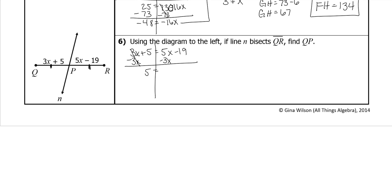Bring my 5 down. 5x minus 3x is 2x. Bring my minus 19 down. Add 19 to both sides. 5 plus 19 is 14.